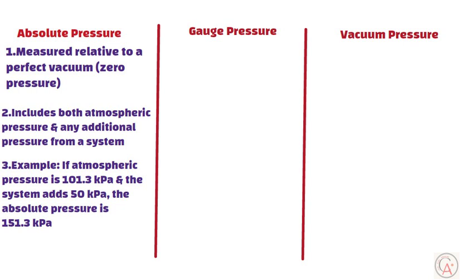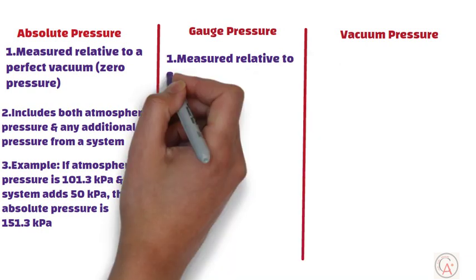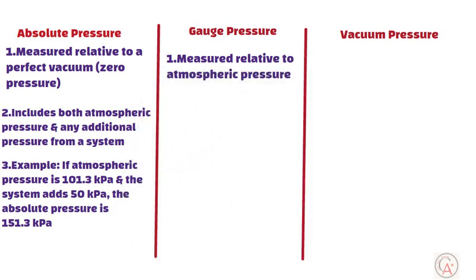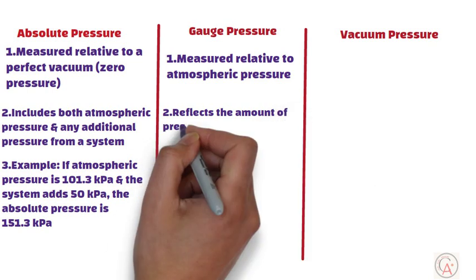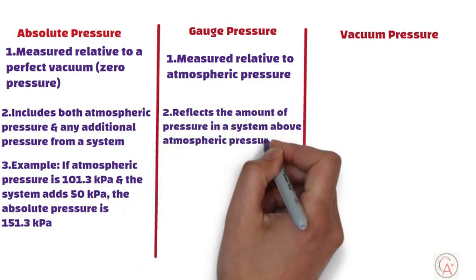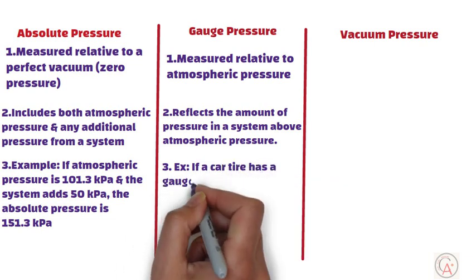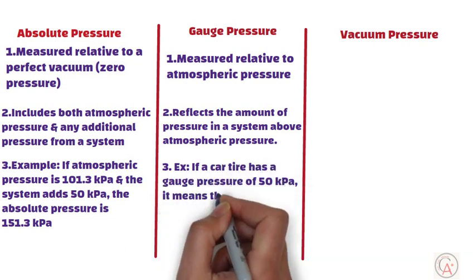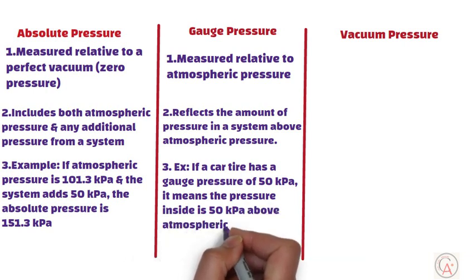Next is gauge pressure. Gauge pressure is measured relative to atmospheric pressure. It reflects the amount of pressure in a system above atmospheric pressure. For example, think of a car tire. If it shows a gauge pressure of 50 kilopascals, it means the pressure inside is 50 kilopascals above atmospheric pressure.